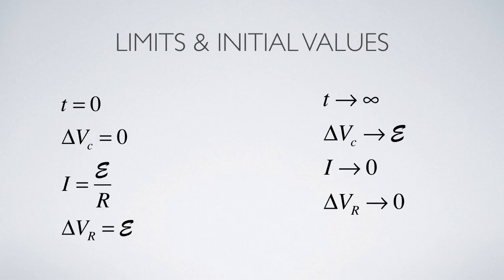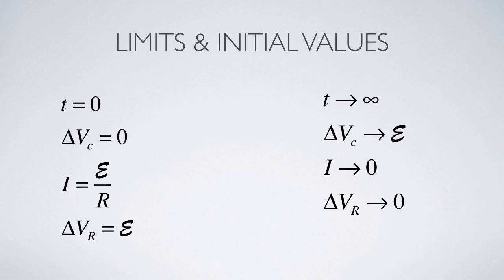At t equals zero, delta V across the capacitor and the charge are both zero. Since delta V across the capacitor is zero, the entire voltage of the battery drops across the resistor, so delta V_R equals the EMF and the initial current is E over R. As time goes on, the current approaches zero, meaning delta V across the resistor also approaches zero. By the loop rule, delta V across the capacitor must then approach the EMF of the battery.